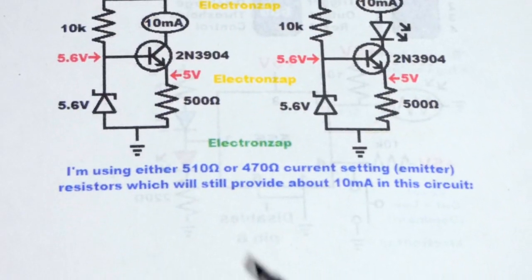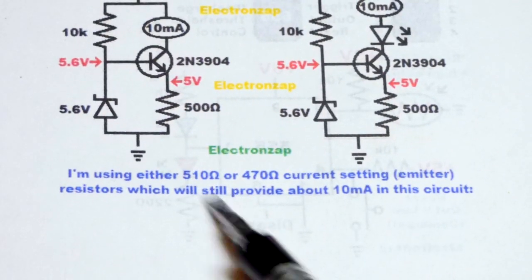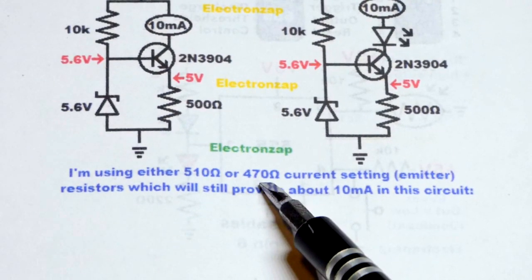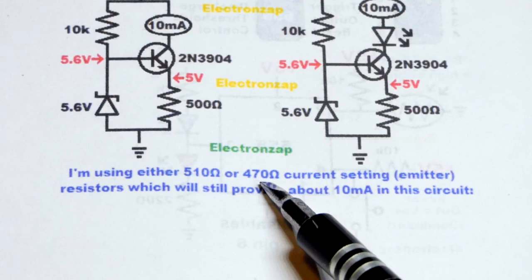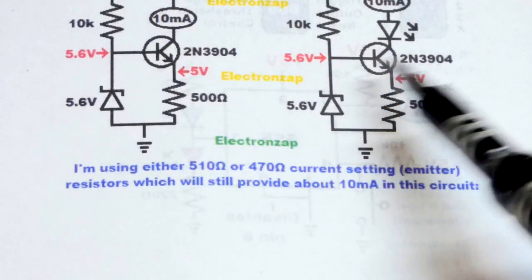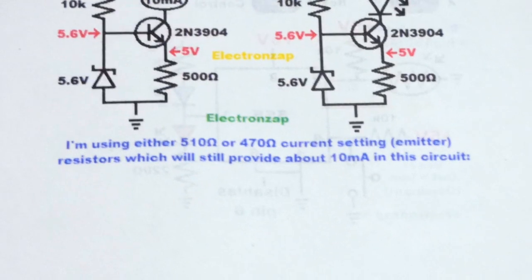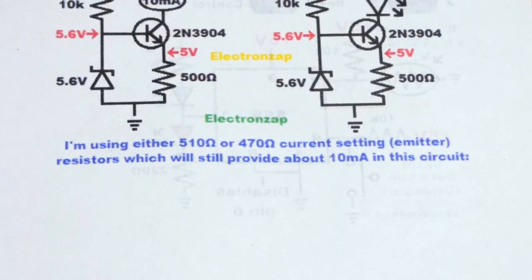I wrote a little note here. I used a 510. Could also use 470. You'd have slightly more than 10 milliamps of current, but would still be close with this exact same circuit. So you'd be plenty fine using that instead.